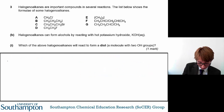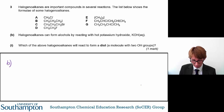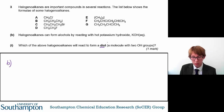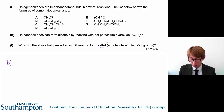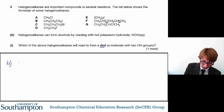Part B: halogenoalkanes can form alcohols by reacting with hot aqueous potassium hydroxide. Which of the above halogenoalkanes will react to form a diol? A diol is a molecule with two OH groups, so all you need to do is look for the molecule that has two halogens in it. Only one of the seven molecules does, and that is molecule F, because it has a chlorine atom and an iodine atom. So the answer is compound F.